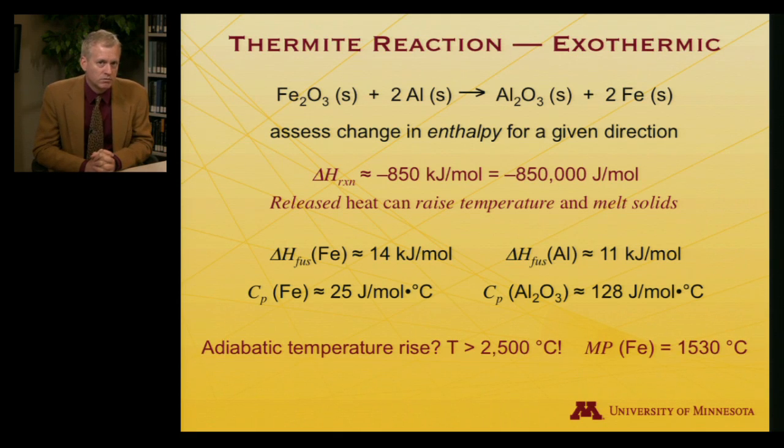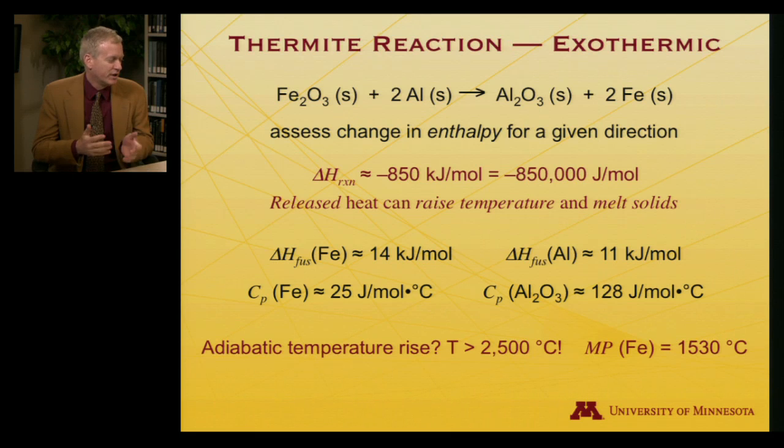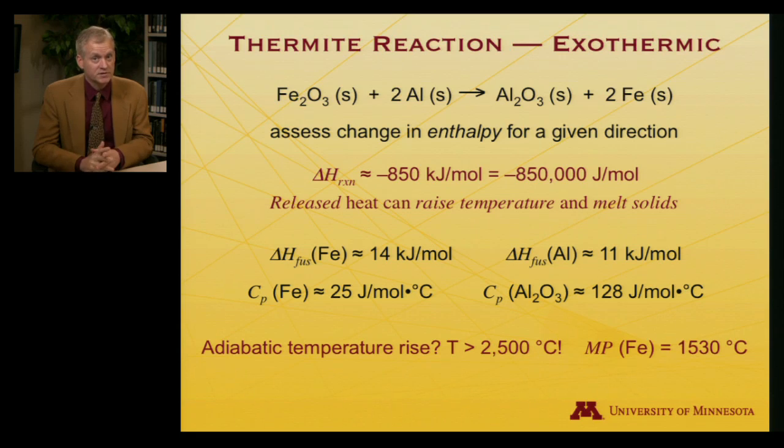The actual temperature rise turns out to be a bit in excess of 2,500 degrees. The difference reflects that we played a little loose by assuming all these values are constants over the entire temperature range — aluminum actually begins to vaporize at high enough temperatures, and that takes energy. But 2,500°C is well above the melting point of iron, which is 1,530 degrees Celsius. That's why we observed the iron melting, becoming a molten red flowing liquid that fell through the bottom of the flower pot, and then we saw that golden-red glowing substance lying in the sand as it re-solidified.